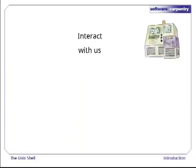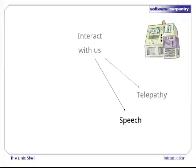They can do the last of these in many different ways. For example, they can use telepathy, i.e., direct brain-computer links. This technology is still in its infancy, but I for one look forward to being assimilated as it matures. Another way to interact with computers is to talk to them. As you can tell, this technology is also still somewhat immature.